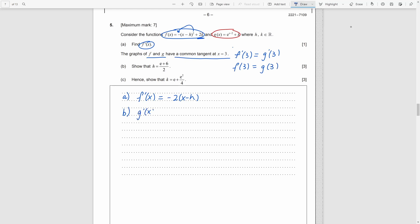We need to show h equal to something. So, we find g dot x first, and then we substitute 3 for x. As we find f dot x in part A, we can also put 3 into it. Set them equal to each other, solve it, and done.